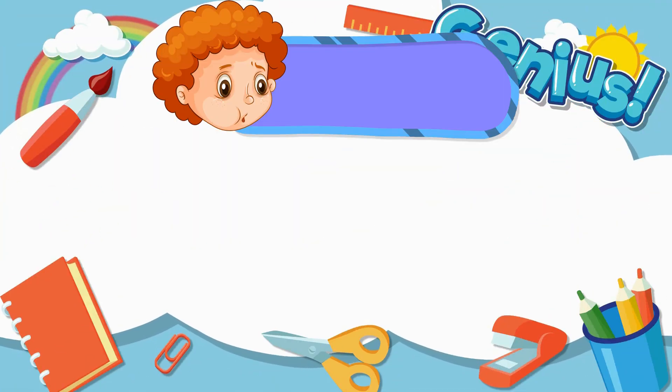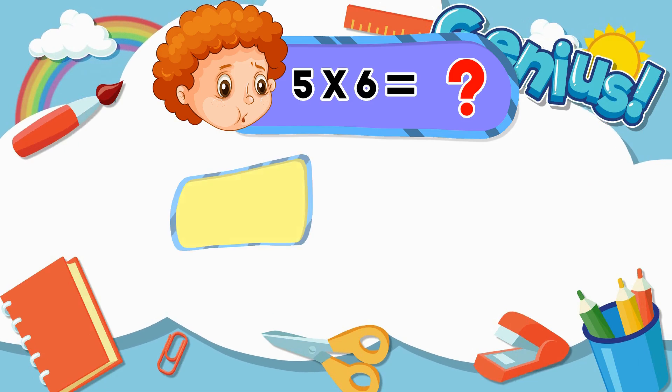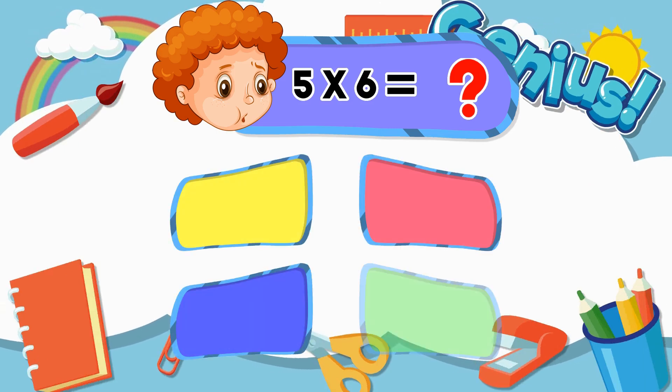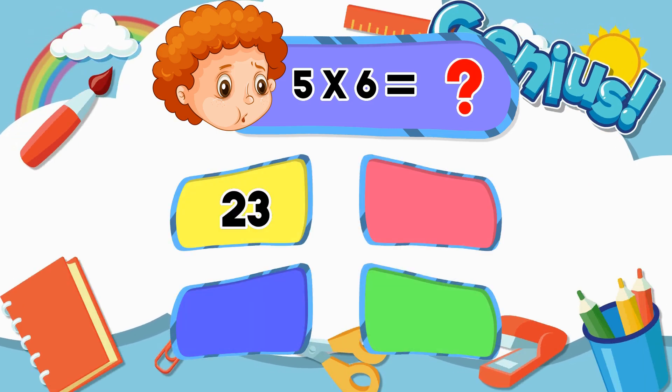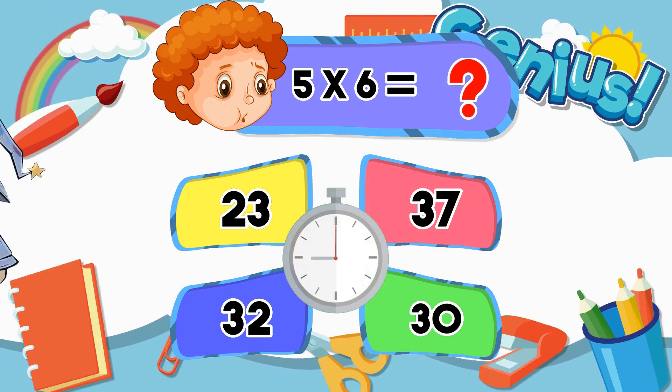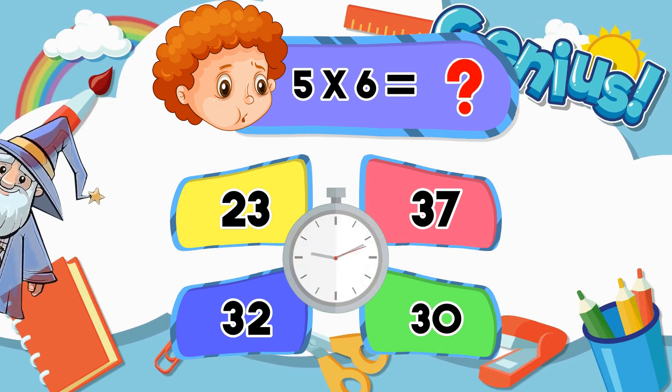What is 5 times 6? 23, 37, 32, 30. Answer: 30.